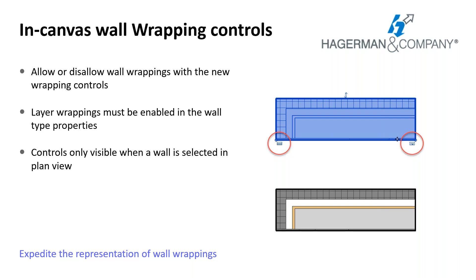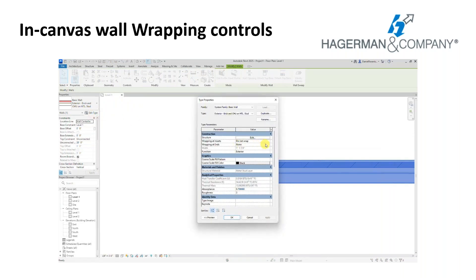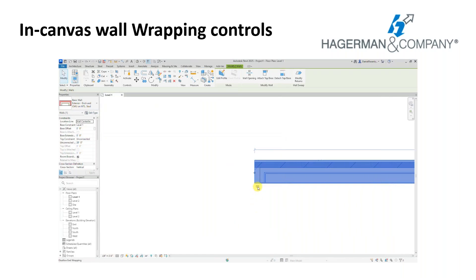I'm surprised it took this long, but we can now allow or disallow wall end wrapping conditions with controls in plan views. When wall layer wrapping is enabled for wall ends, the wrapping behavior of each wall end can be changed with the control located near the wall end. The control is only visible when the wall is selected in a plan view. You need to ensure wrapping is turned on in the type properties, then you can see the new toggle icons in plan to control that wrapping.